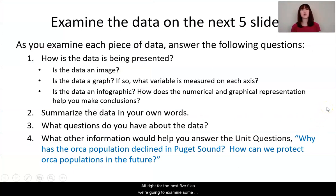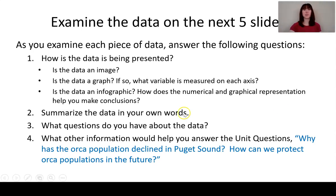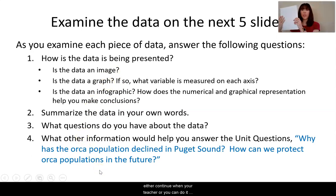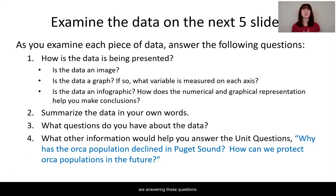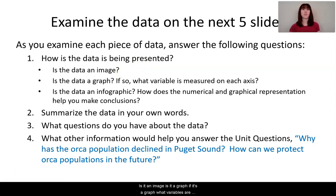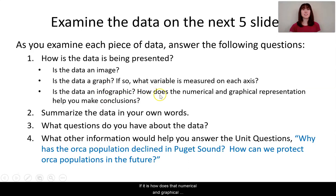For the next five slides, we're going to examine some data to help us further understand the orca whales in Puget Sound. For each of those five data sets, I want you to answer these four questions — meaning you'll answer them five times for a total of 20 answers. So have that scrap paper ready. Question one: how is the data being presented? Is it an image, a graph — and if so, what variables are on each axis — or an infographic? If it's an infographic, how does the numerical and graphical representation help you make conclusions?